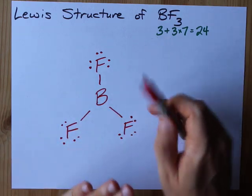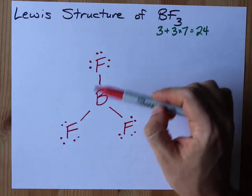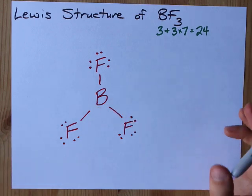Those people are forgetting that boron is an exception to the octet rule. Boron is perfectly happy with just three bonds to it. It's the way it goes. This is the valid Lewis structure.